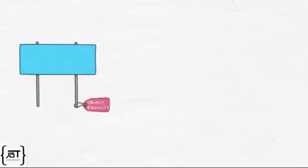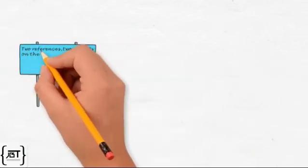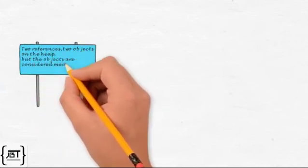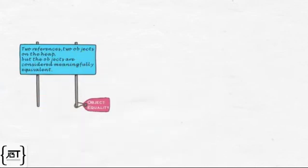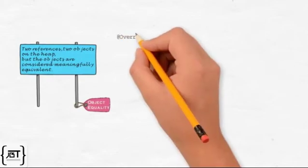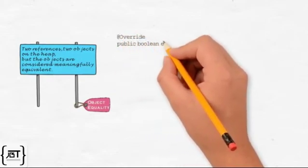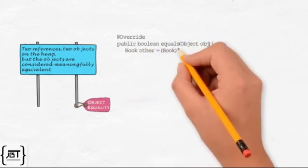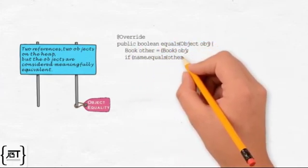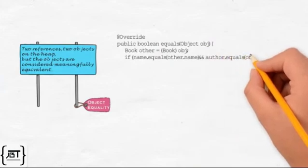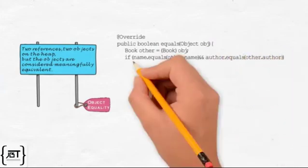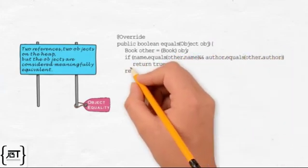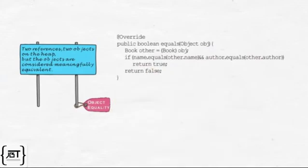So, object equality means two references, two objects on the heap, but the objects are considered meaningfully equivalent. Let us look at the code now. The Book class overrides the equals method such that if two book objects have the same value for name and author, the equals method should return true, otherwise false.